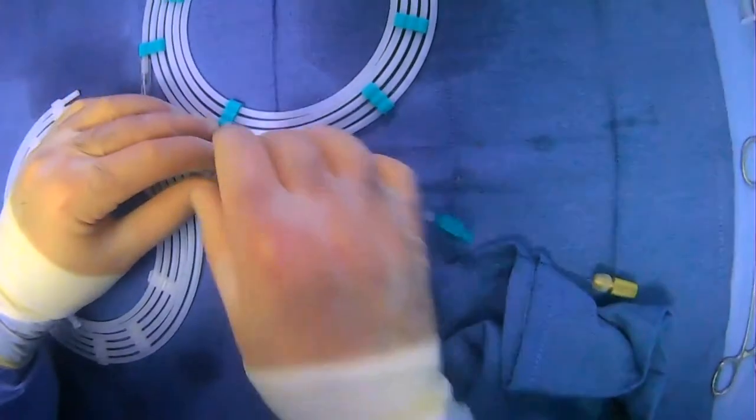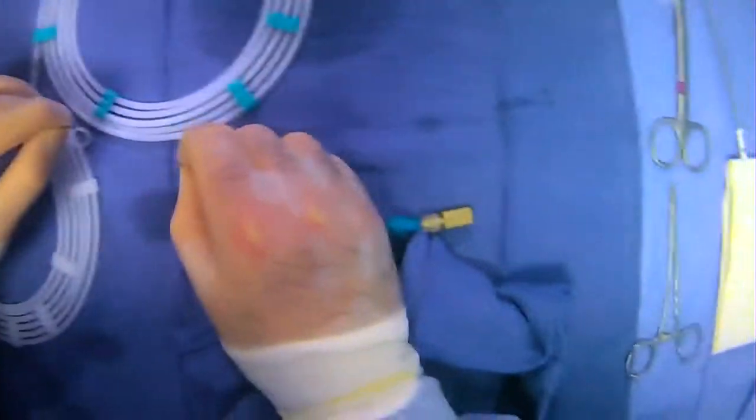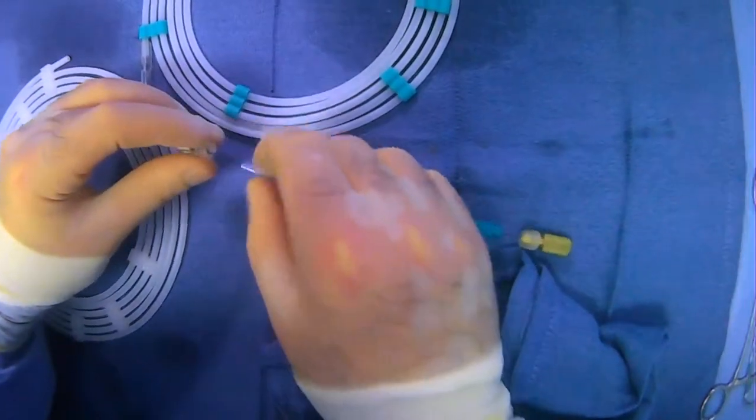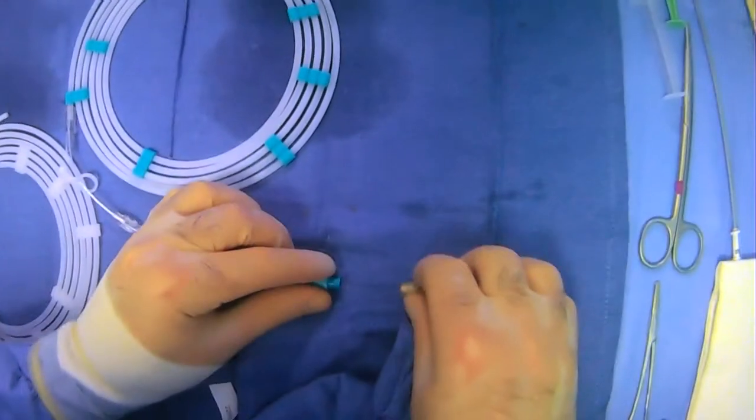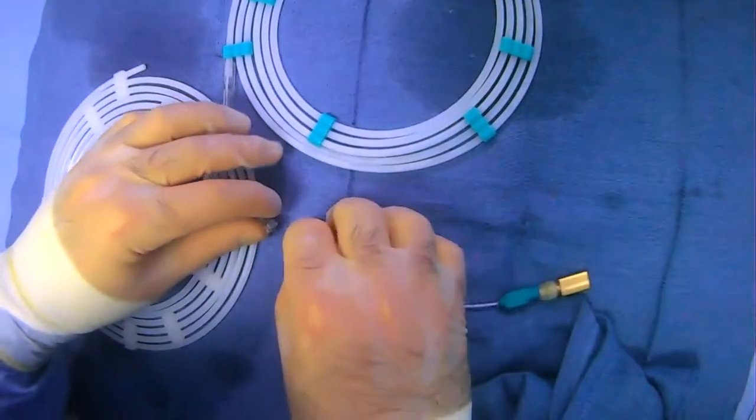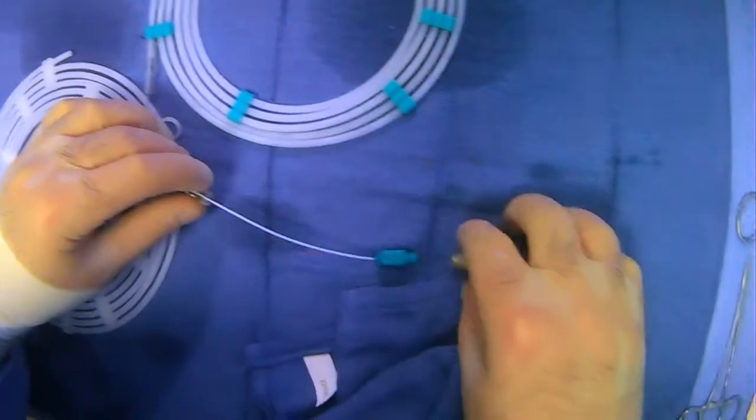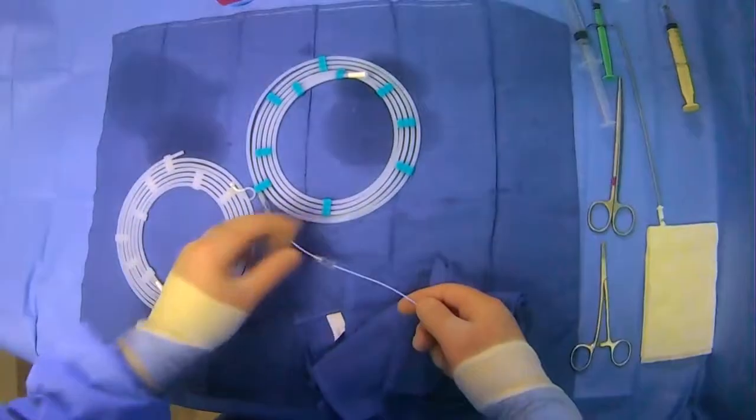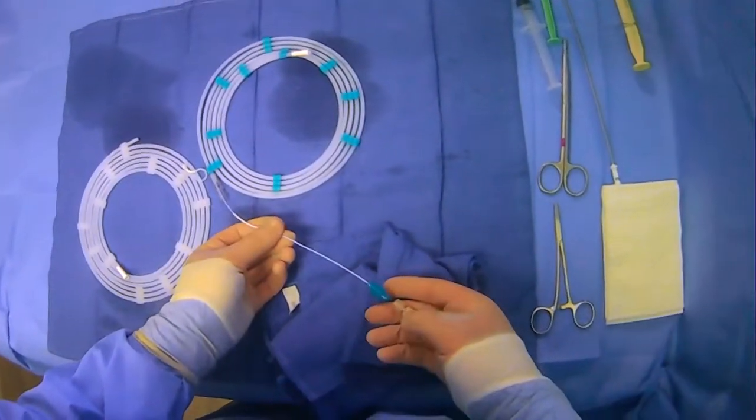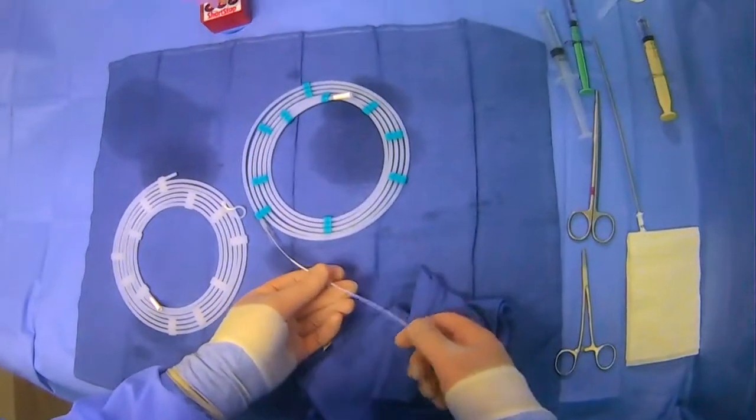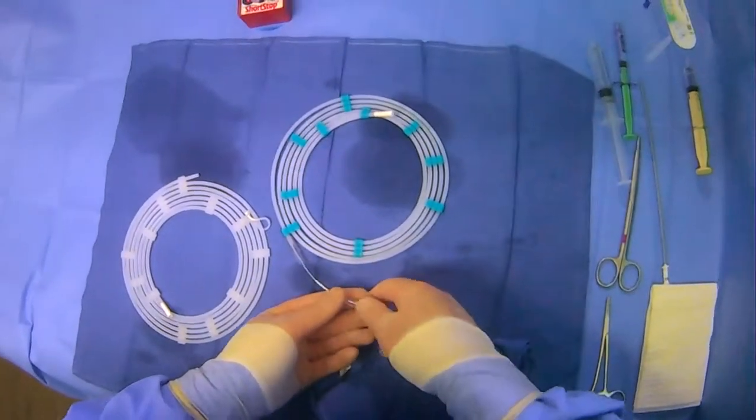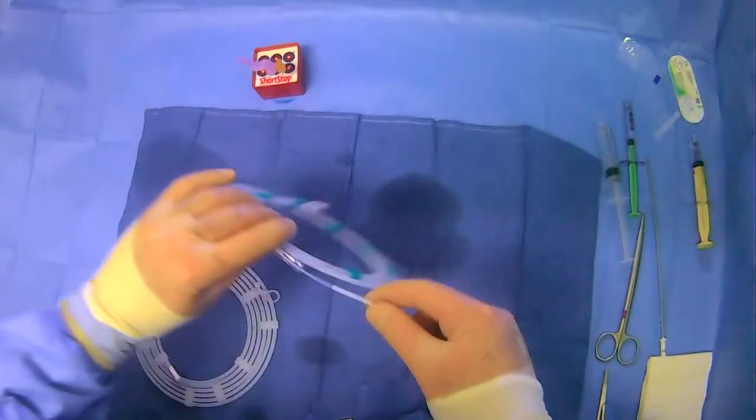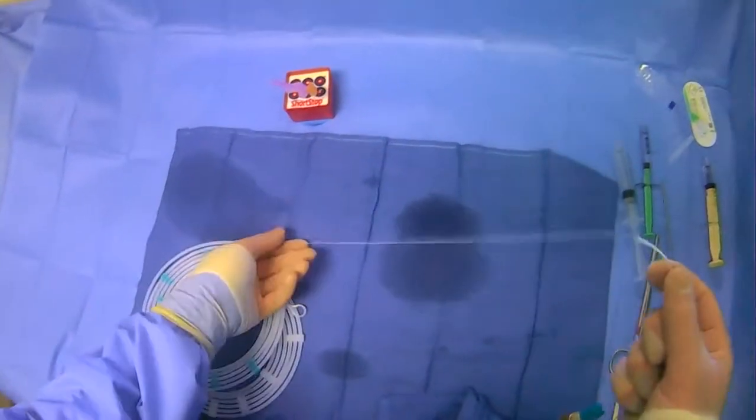So now we can bring everything in and hub it. There we go. Okay, so now we have everything in place. Everything's been flushed and we can pull out the microcatheter here.